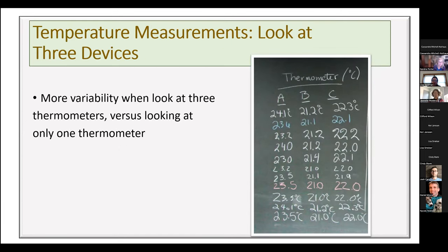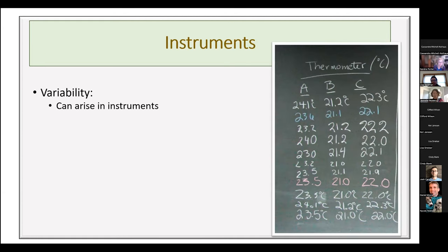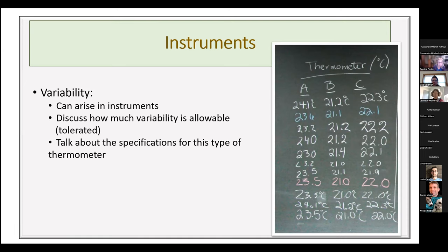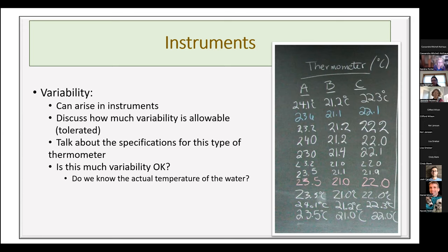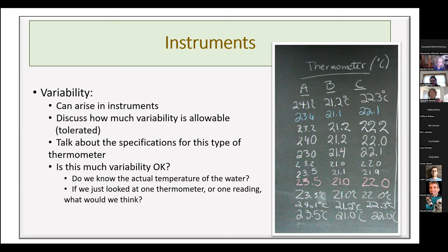Students easily see there's more variability between the three thermometers than within any one thermometer — suggesting instrument variability. We then talk about how much variability is allowable from an instrument, the specifications for this kind of thermometer, and ask: is this much variability okay? Do we actually know the temperature of the water? If we just looked at one thermometer and assumed it was correct, would we be deceived? I deliberately leave that question unanswered for now.